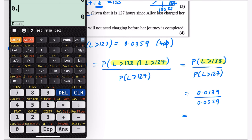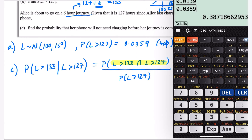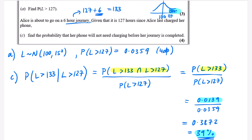P(L > 133) from the calculator is 0.0139. So dividing 0.0139 by 0.0359 gives 0.3872, which is about 39%. This makes sense — compare this to just the probability of lasting longer than 133 hours without any condition, which is only 1.39%. Given that the phone has already lasted 127 hours, there's a much higher likelihood it will reach 133 hours, because it's already one of those phones that has survived to this right-hand tail.